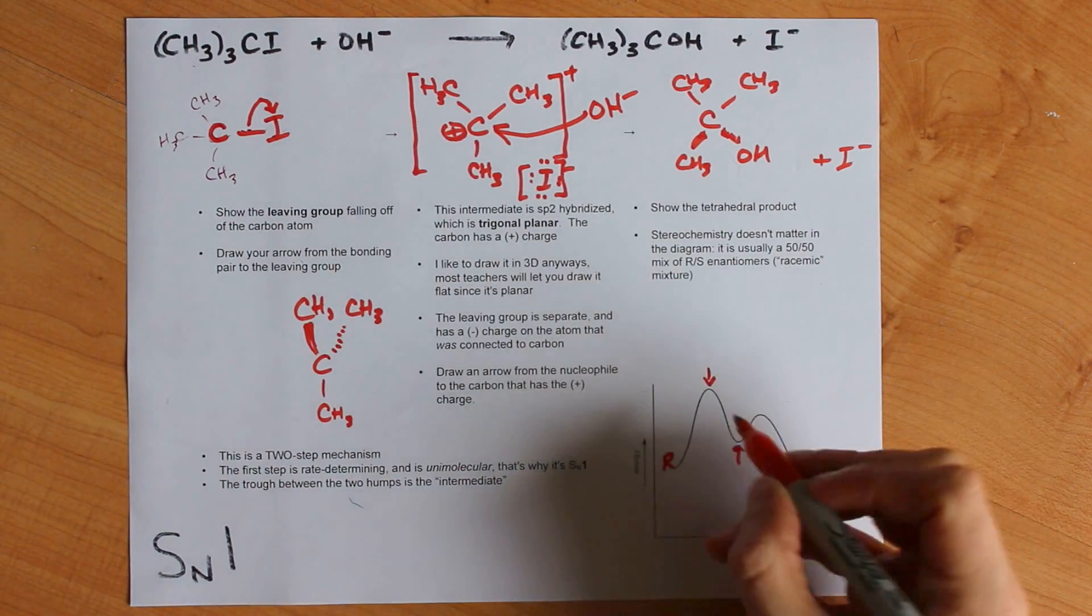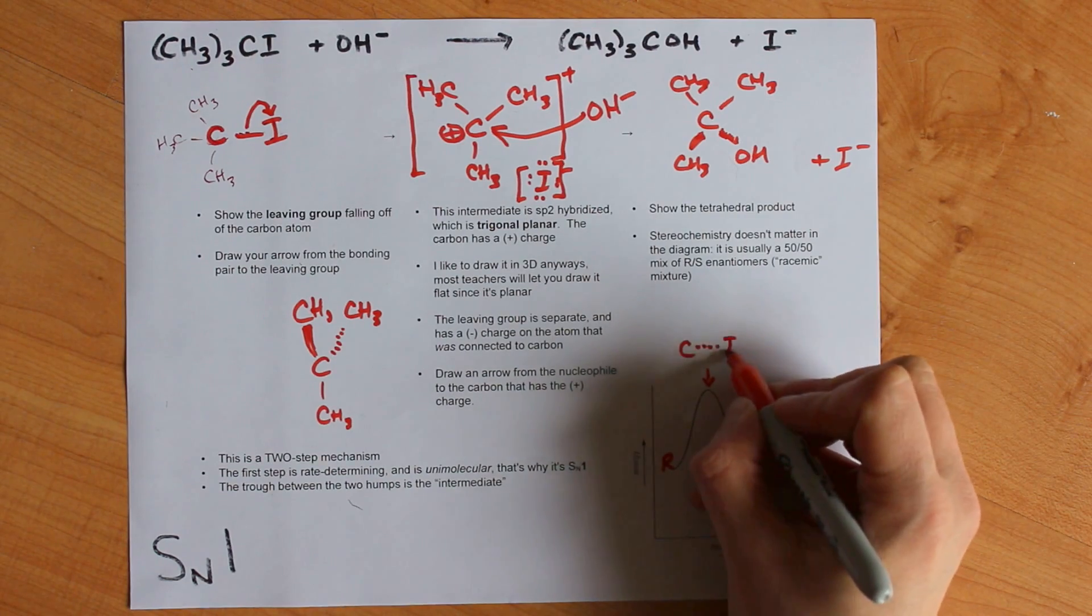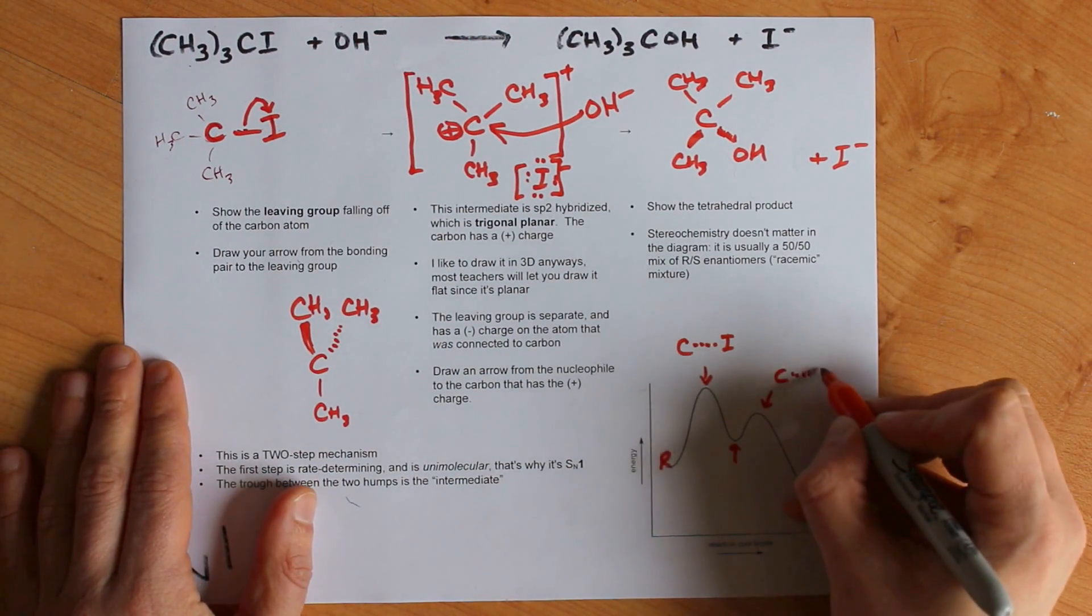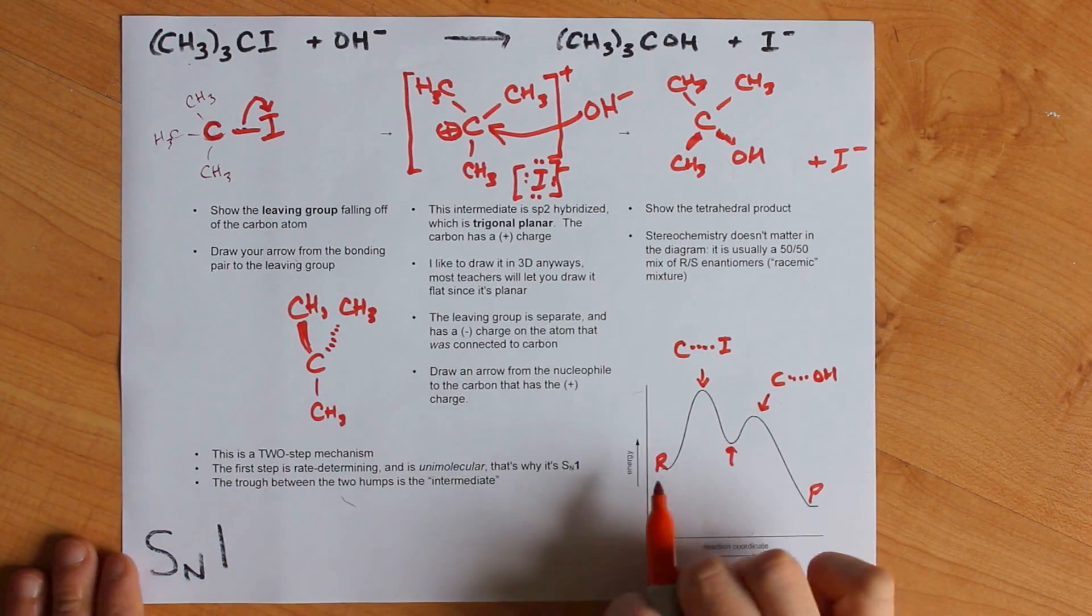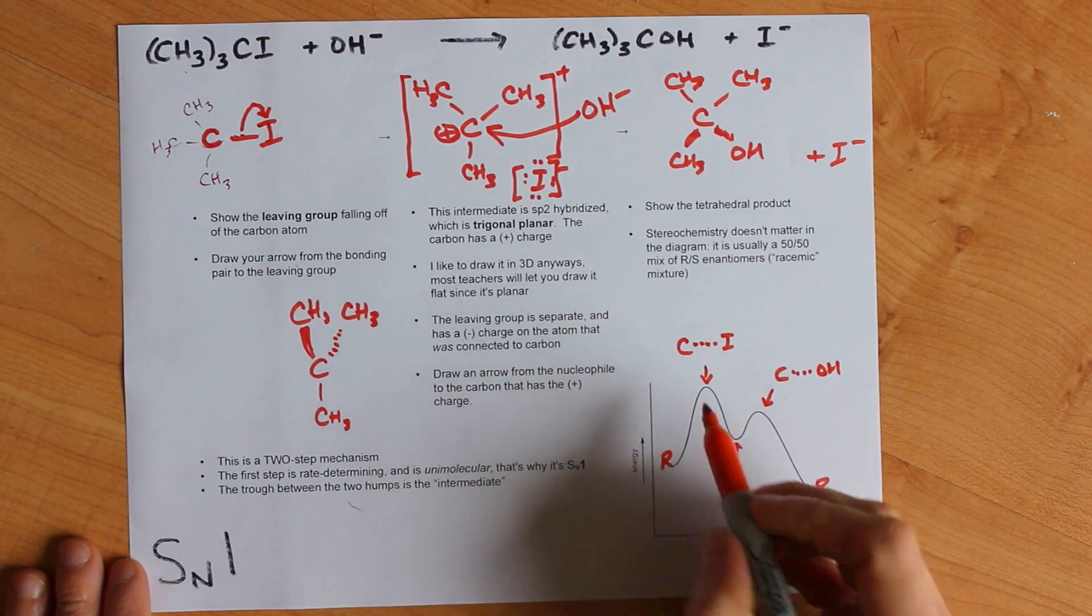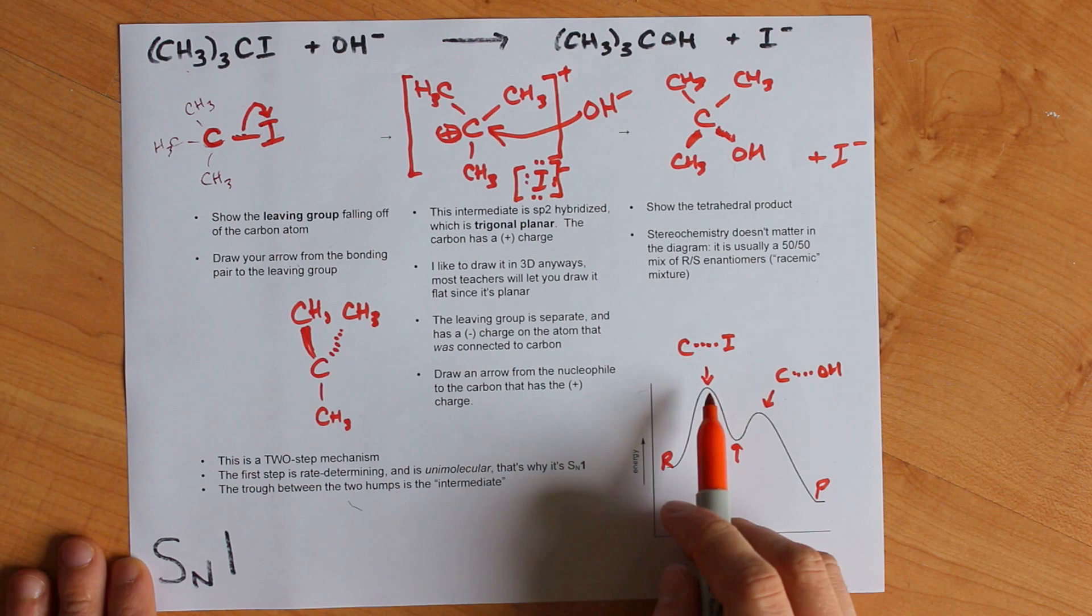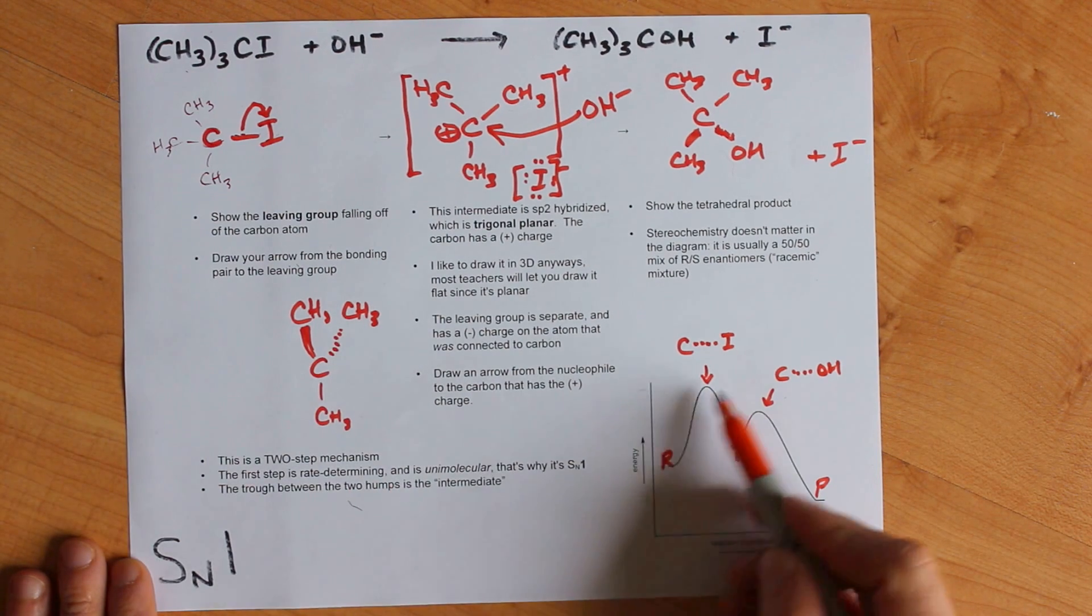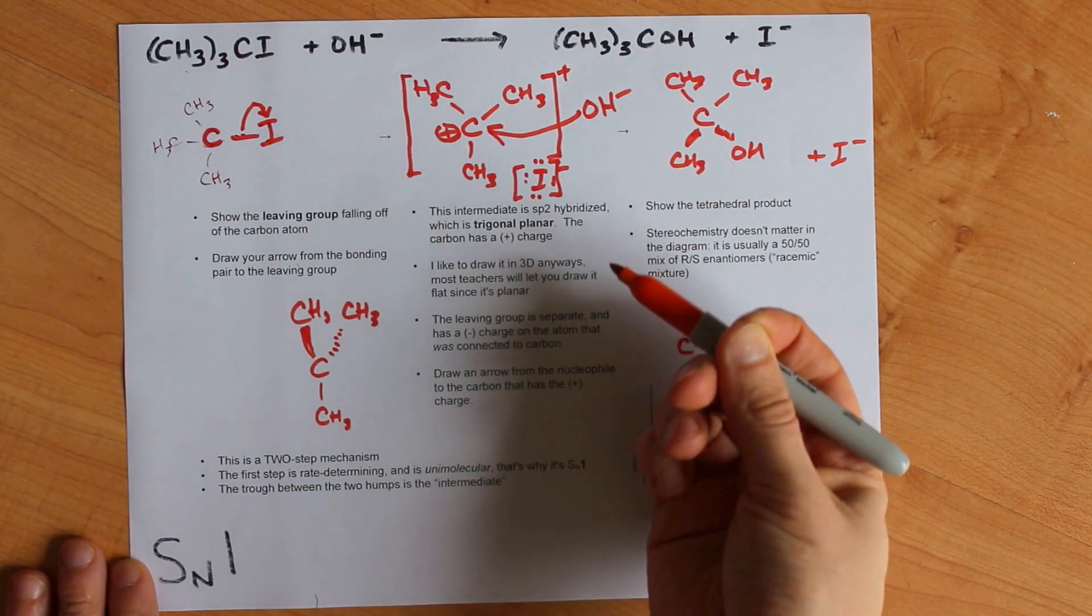This is for when the carbon is half-bonded to the iodine, and this one is for when the carbon is half-bonded to the OH. I'm not going to draw the methyl groups in there. The highest peak here is for step one, which is the iodine falling off. The rate-determining step is the first step, the first hump, and it is one chemical breaking apart into two.